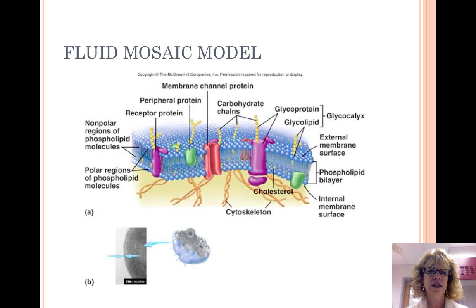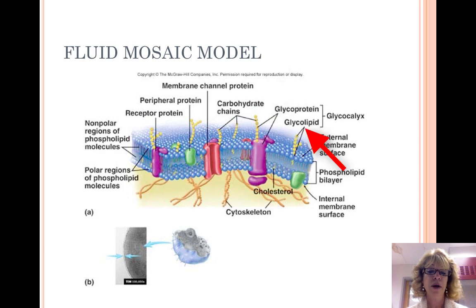There are different proteins embedded in the membrane that help to signal things or move things in and out of the cell. The cytoskeleton helps to hold the delicate membrane together. Glycoproteins are chains of sugars attached to a protein. Glycolipids are chains of sugars attached to a lipid. They act as ID tags for differentiation in embryos or recognition by other cells.